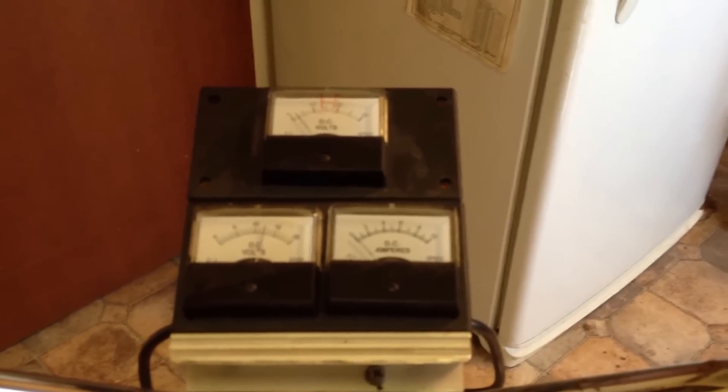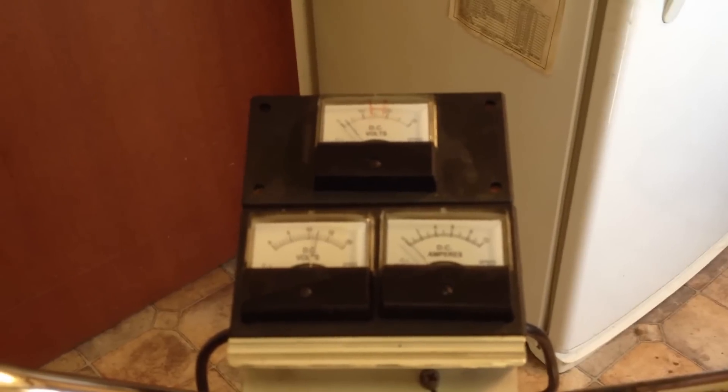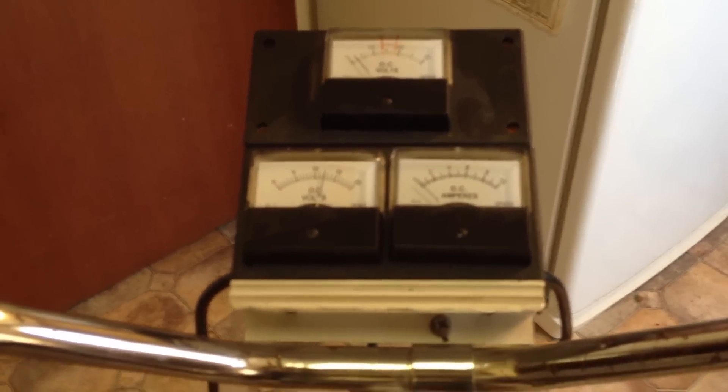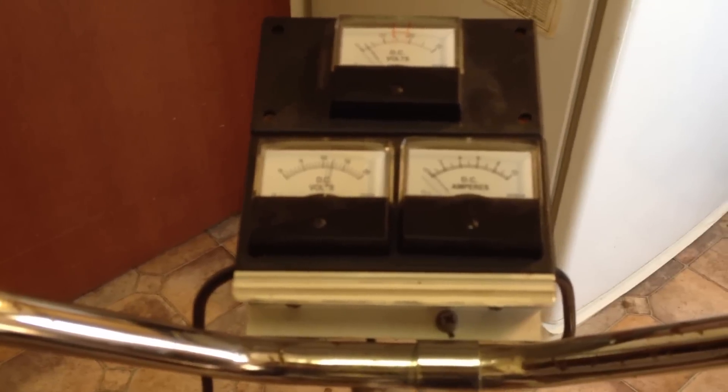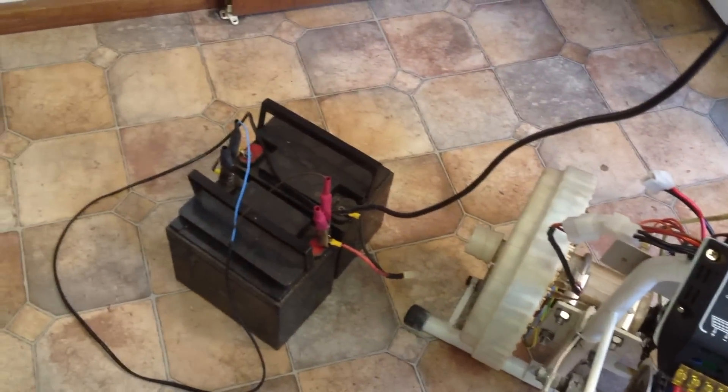It goes up to some gauges that I can read everything that's going on. The top one is the overall input energy, or power into the charge controller. The one on the left reads the battery voltage and the one on the right reads the amps going into the battery, and that goes down into there.